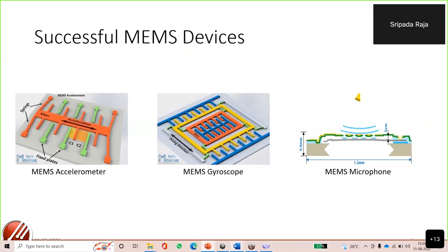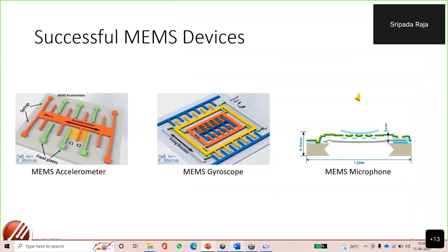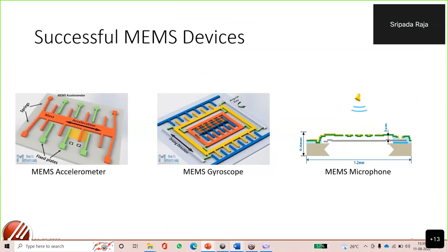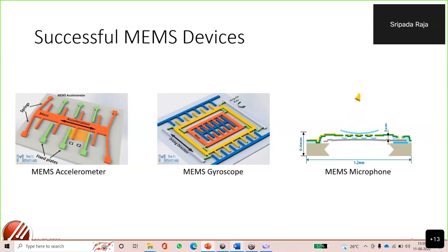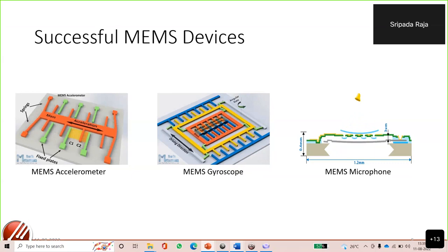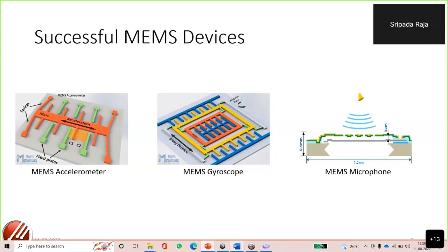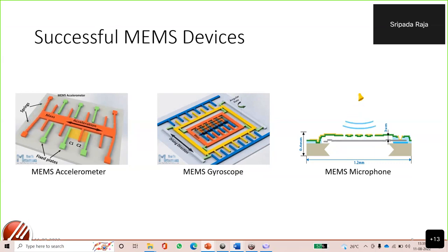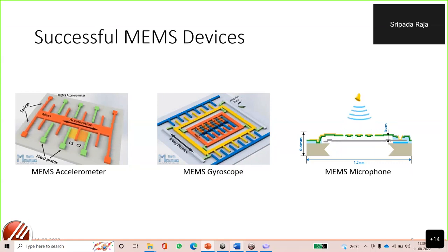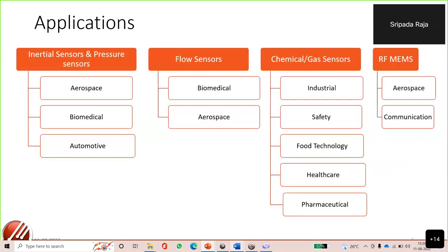Some successful MEMS devices include: A — the accelerometer, B — the gyroscope, and C — the MEMS microphone. Accelerometers and gyroscopes have been part of our smartphones for quite some time, and MEMS microphones have been implemented in iPhones released around 2018-19.